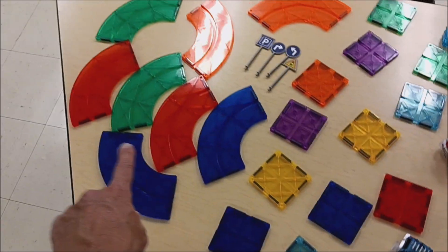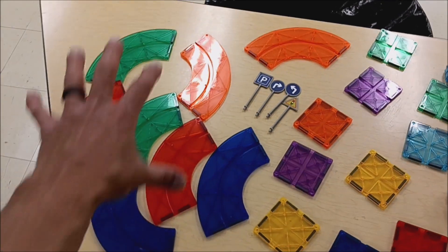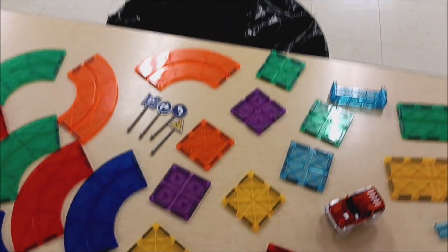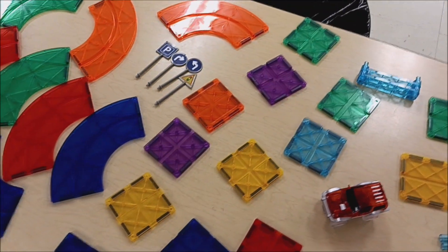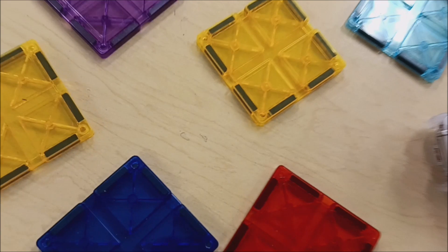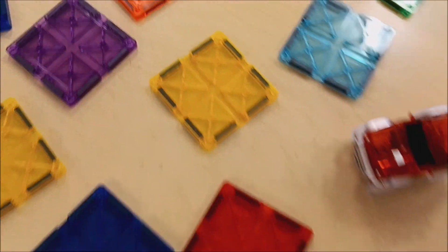we go. We have one, two, three, four, five, six, seven, eight of the curved pieces. We have one, two, three, four, five, six, seven, eight, nine, ten, eleven, twelve of the square pieces. Kind of a close-up there. We